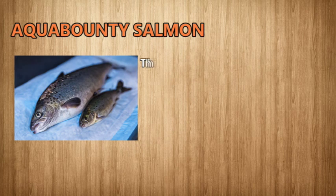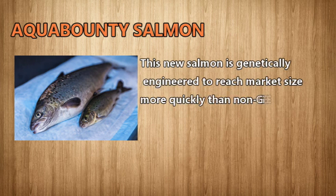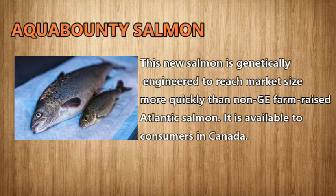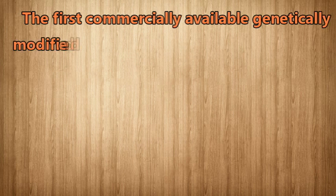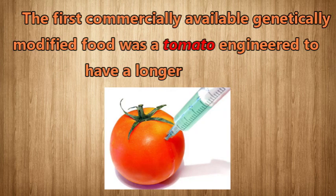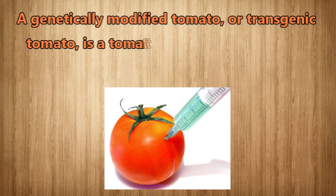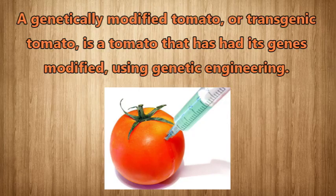AquaBounty Salmon: this new salmon is genetically engineered to reach market size more quickly than non-GE farm-raised Atlantic salmon. It is available to consumers in Canada. The first commercially available genetically modified food was a tomato, engineered to have a longer shelf life. A genetically modified tomato, or transgenic tomato, is a tomato that has had its genes modified using genetic engineering.